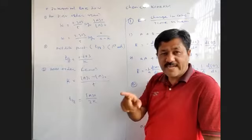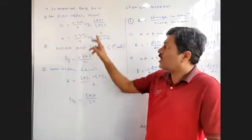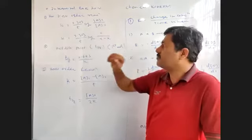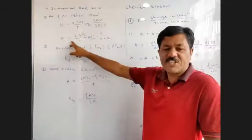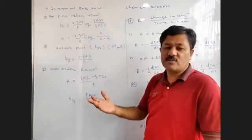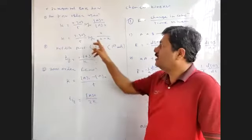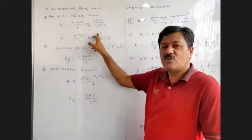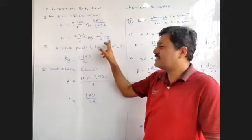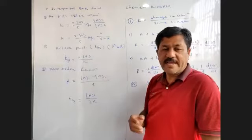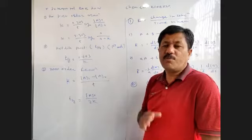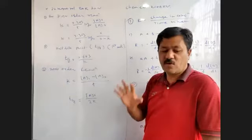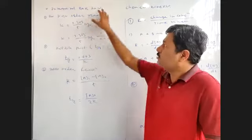Aₜ is the final concentration of the reactant remaining after time t. A₀ is always the initial concentration. In another form, A is the initial concentration and x is the concentration reacted in time t. So, A−x is the remaining concentration after time t. This is the first-order reaction formula.